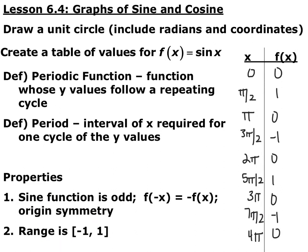Some properties of the sine function: it's odd, so f(-x) = -f(x), which means it also has origin symmetry. Its range is from negative 1 to 1 inclusive. The period for a non-translated, non-transformed sine function is 2π — basically once around the unit circle — because it takes that long to complete one cycle, going 0, 1, 0, negative 1, and back to 0.